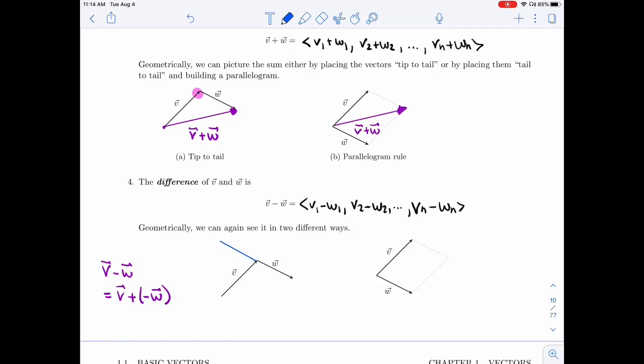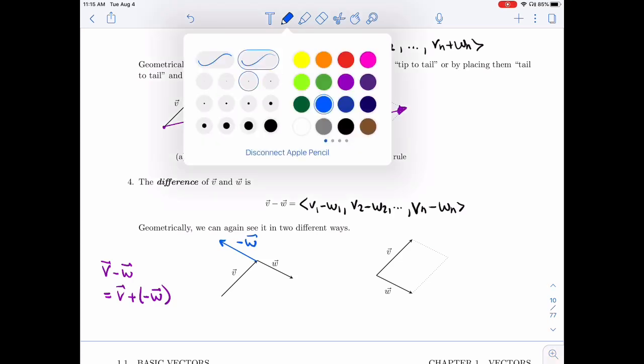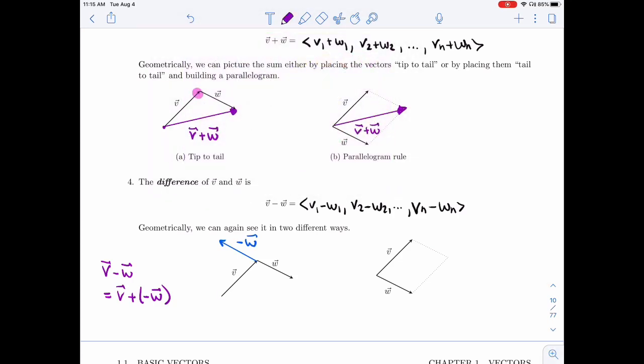like this, then V and minus W are tip to tail and I could take V first and then minus W and I'll land over here at V minus W.